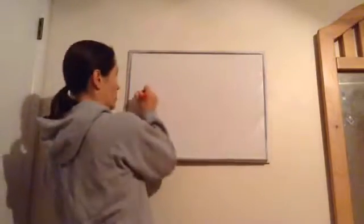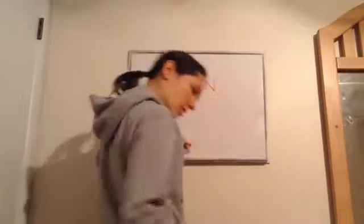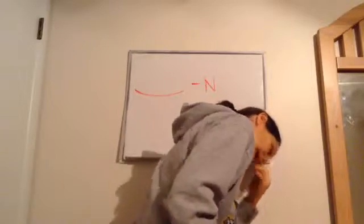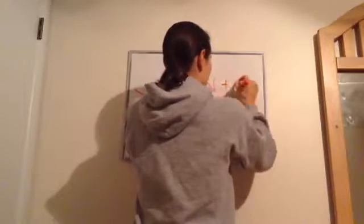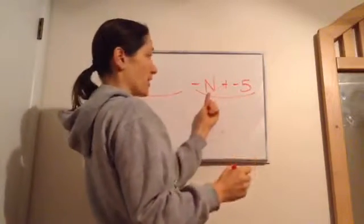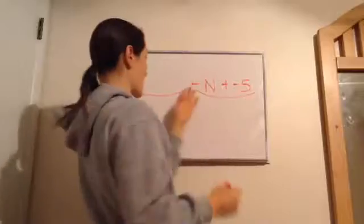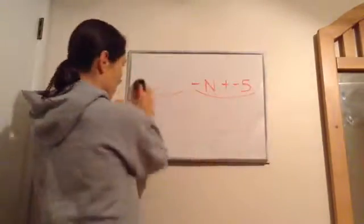Here's another one: 'the sum of the opposite of a number and negative five.' Notice the sum of — what are we finding? The sum of the opposite of a number and negative five. So I found the sum of the opposite of a number and negative five. See how 'the sum of' matters here.